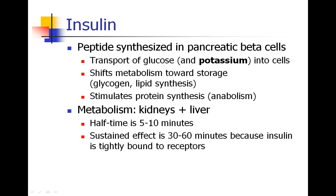In general, insulin's role is to shift your metabolism towards a storage function: production of glycogen, which is a sugar storage; synthesis of lipids, which is for fat storage; and synthesis of proteins, which is anabolism — the opposite of catabolism. Insulin is metabolized in the kidneys and in the liver, and it has a very short half-life of just about 5 to 10 minutes.